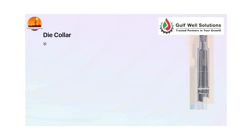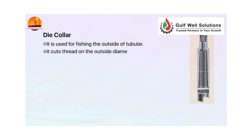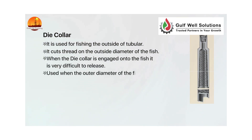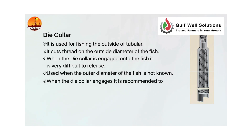Die collar: used for fishing the outside of tubular. It cuts a thread on the outside diameter of the fish. When the die collar is engaged onto the fish it is very difficult to release. Used when the outer diameter of the fish is not known. When the die collar engages, it is recommended to run a safety joint in order to disconnect the drill string.